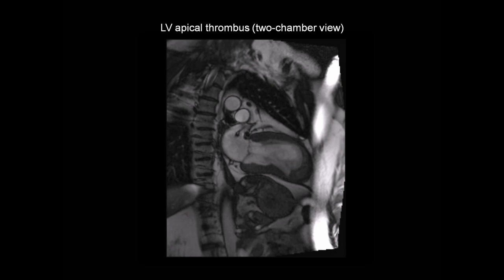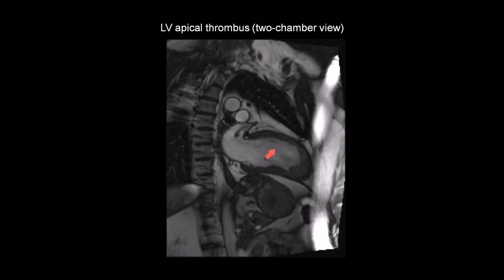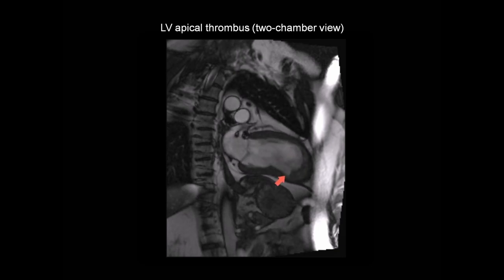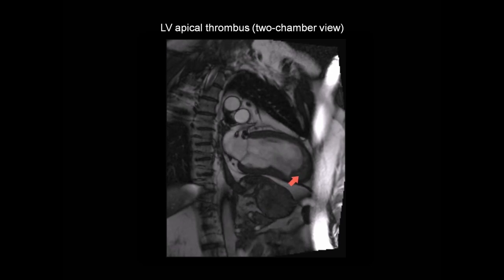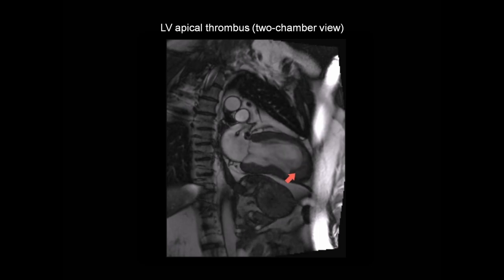This is the same patient with an ischemic cardiomyopathy. This is a cine-CMR taken in the two-chamber view. We have the left ventricle, the mitral valve, and the left atrium. And once again, we can see that the left ventricular apex has been affected by a myocardial infarction — it's dyskinetic, and there's this large laminated apical thrombus present at the apex.